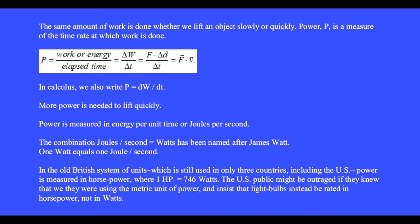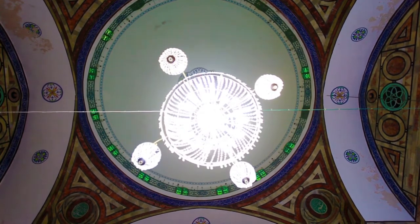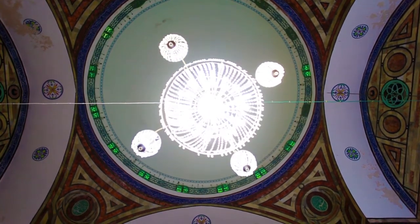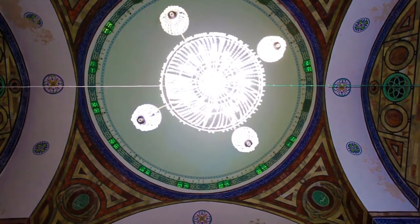In the old British system of units, which is still used in only three countries including the US, power is measured in horsepower, where one horsepower equals 746 watts. The US public might be outraged if they knew that they were using the metric unit of power and insist that light bulbs instead be rated in horsepower, not watts.